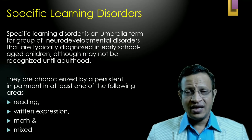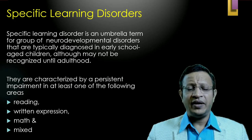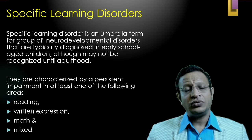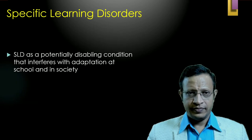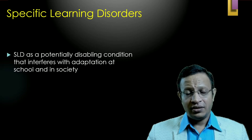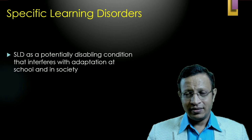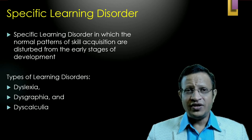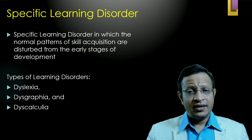Specific learning disorder is an umbrella term for a group of neurodevelopmental disorders that are typically diagnosed in early school-age children, although may not be recognized until adulthood. They are characterized by persistent impairment in at least one of the following — the word 'persistent' is very essential — difficulties in reading, writing, expression, mathematics, or a mixture of the above. SLD has a potential for disabling the child's future adapting for academics and also to society.